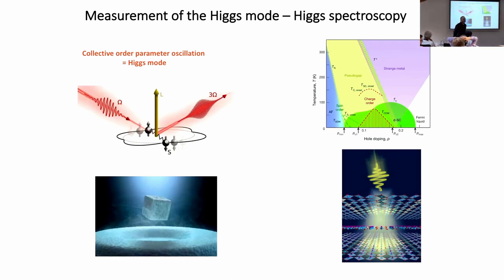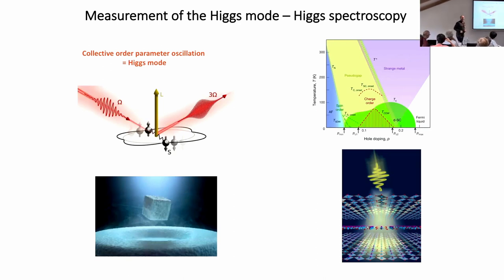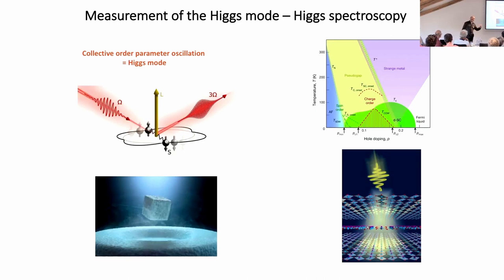Regarding whether the 2Δ limits of Higgs modes match general expectations: for the A1g mode this is the case. For a more complicated symmetry superconductor, there is a full spectrum of Higgs modes depending on the momentum of the quench. With finite momentum light - for example at grazing incidence, or using a Raman-type experiment with large numerical aperture - one can reach phases where fingerprints appear in different symmetry channels depending on the symmetry of the superconductor.